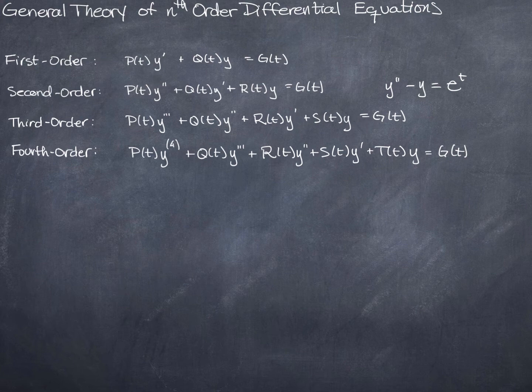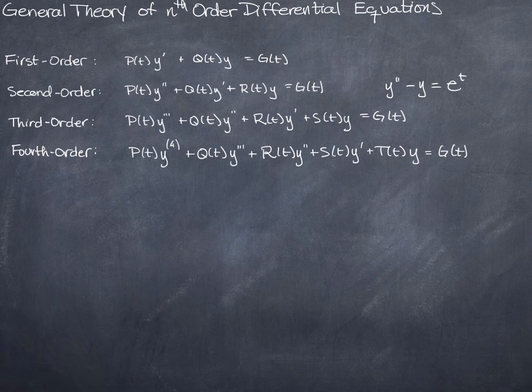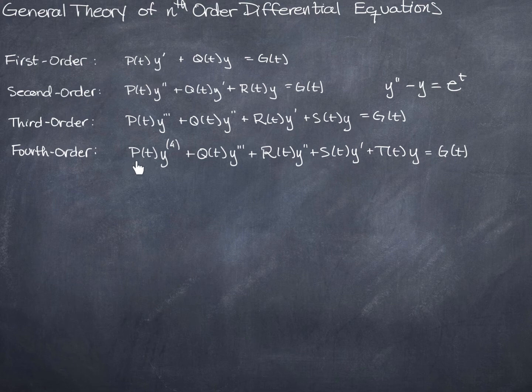Now let's take a look at an nth order differential equation. One thing to note is that I'm going to run out of letters pretty quickly. If n is greater than 26, I won't have enough letters in the alphabet. Furthermore, it's conventional, especially when dealing with the general case — which is what we're implying when we say nth order — to pick one letter and give them subscripts.